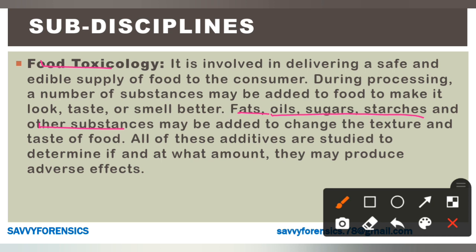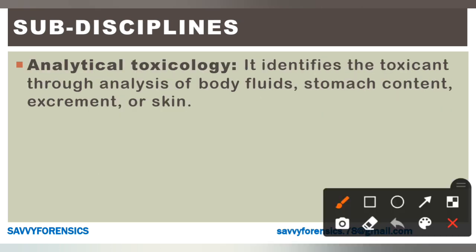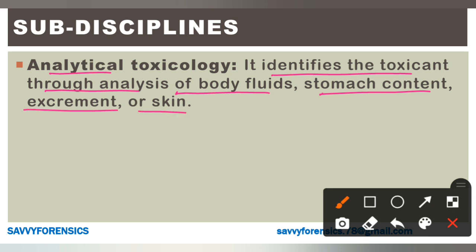Now let's talk about analytical toxicology. It identifies the toxicant through analysis of body fluids, stomach contents, excrement, and skin. Basically, 'toxicant' means toxic substances — poison that enters your body. You use analysis and examination of body fluids, stomach content, excrement, or skin — that is analytical toxicology. Toxicology in general is the study of poisons, but analytical toxicology uses analysis methods.